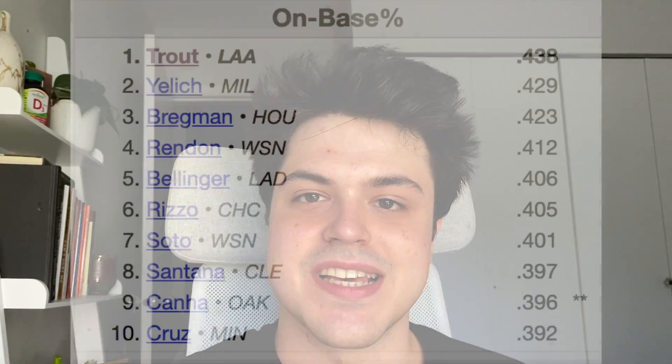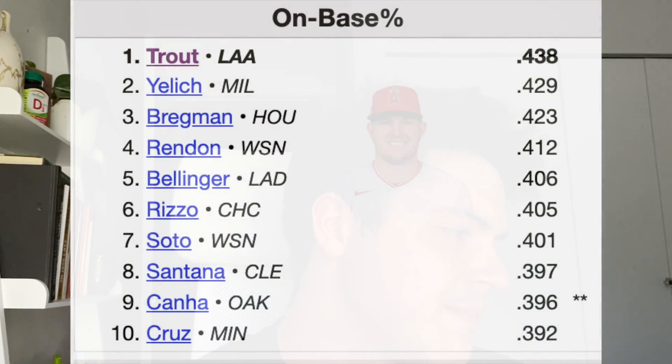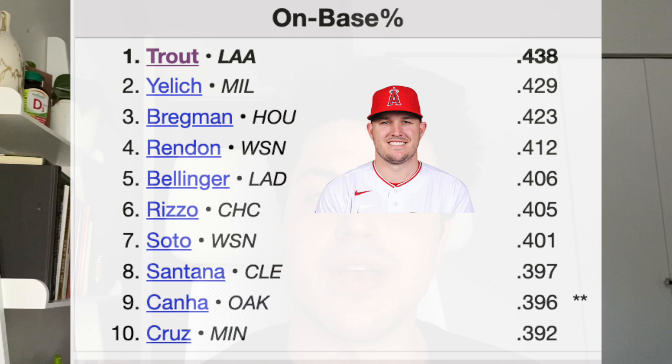I also wanted to go over who has the best on-base percentage in baseball. As you can see, Mike Trout of course is leading the way. If you haven't watched my Mike Trout video, watch it — it goes in depth on why Mike Trout is such a good player. He leads the league in on-base percentage because if I'm a pitcher against Mike Trout, I'm going to want to walk him a lot. He leads the way along with some guys you might recognize, such as Christian Yelich and Cody Bellinger.